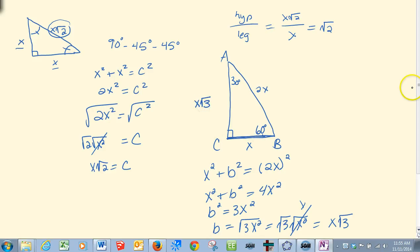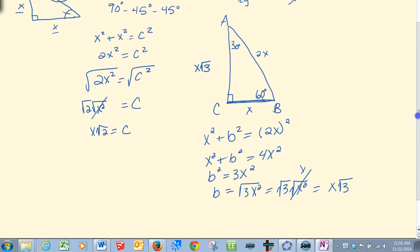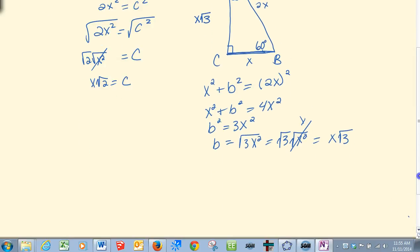These ratios can be trusted and relied upon to work every time. So just like you write out sine theta equals opposite over hypotenuse and cosine theta equals adjacent over hypotenuse and tangent theta equals opposite over adjacent...